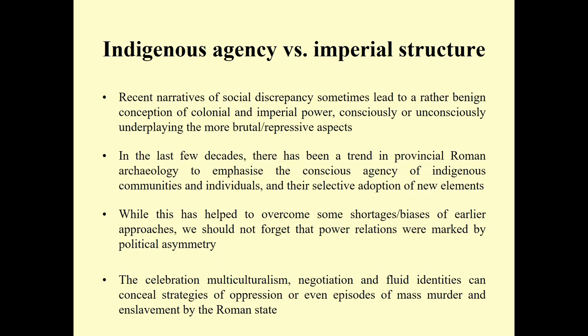Recent narratives on Roman imperialism have put quite a lot of attention on cross-social discrepancy, emphasizing conscious agency of indigenous communities and individuals, and a selective adoption of new elements. There are many positive aspects in these views that have helped overcome biases from earlier research — most notably attributing agency to indigenous communities rather than seeing them as passive recipients of external elements. But at the same time, in some cases this has led to a rather benign conception of colonial and imperial power that can consciously or unconsciously underplay the more brutal, repressive aspects of Roman imperialism.